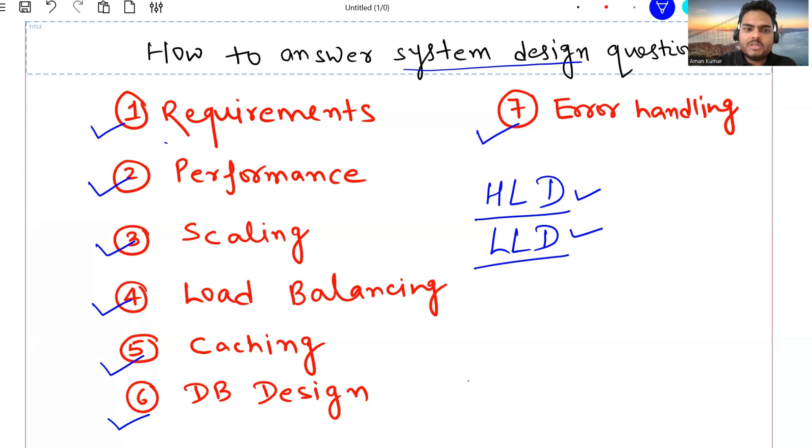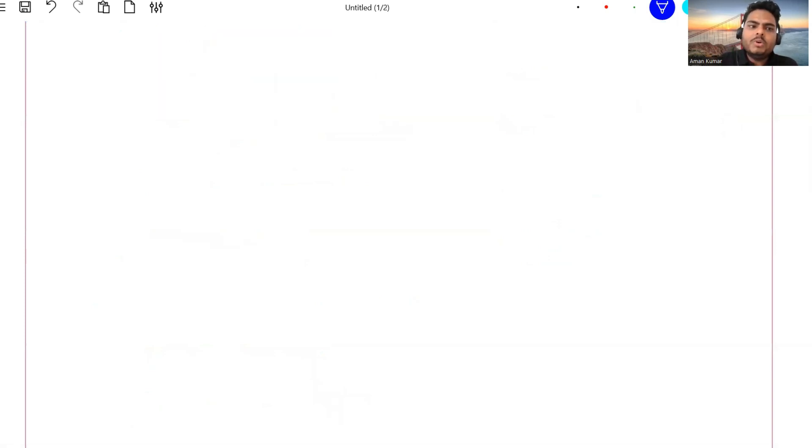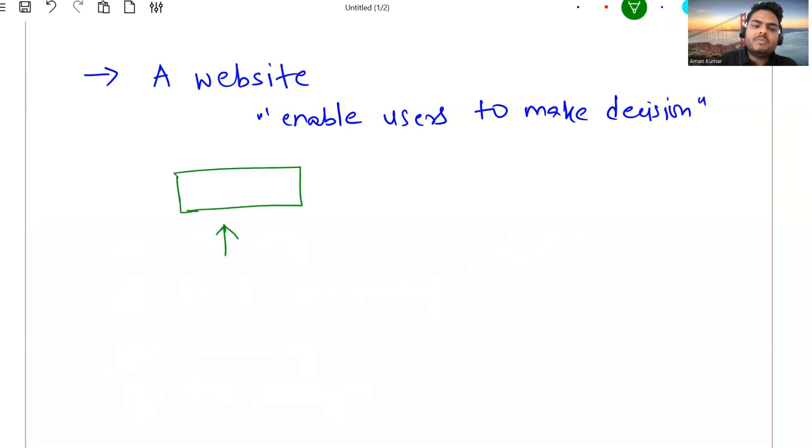Understanding the requirement, the first thing we will try to understand all these things with a simple example. Let's take a simple example through which we will try to relate all those points. So, the example will be, let's say somebody tells you, Hey, I want to have a website. What they want to have? They want to have a website to enable users, to enable users, the buying decision of a stock. Buy or not buy.